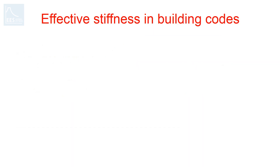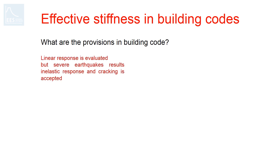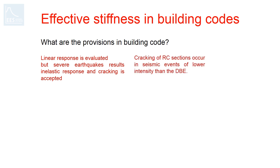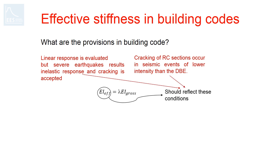So what is effective stiffness in building codes, and what provisions do different building codes have? Before talking about that, we have to understand that seismic analysis and design of reinforced concrete structures are performed based on linear response. However, it is universally accepted that under severe earthquakes, inelastic response and cracking are accepted in structures. Moreover, cracking of RC sections can occur in seismic events of intensity lower than the design level earthquake. Therefore, element properties should reflect this condition and inertia of beams and columns should be reduced accordingly. Building codes prescribe the cracked stiffness in the form of effective stiffness, which is a certain percentage of gross stiffness.